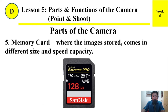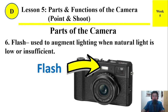Number 5: Memory card. Where the image is stored; it comes in different sizes and speed capacity. Number 6: Flash. Flash is used to augment lighting when natural light is low or insufficient.